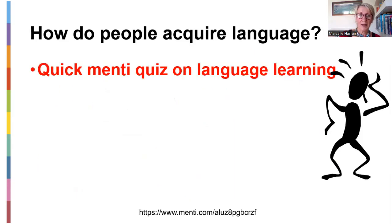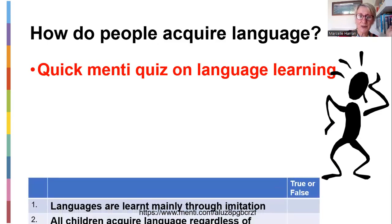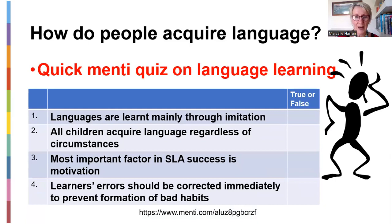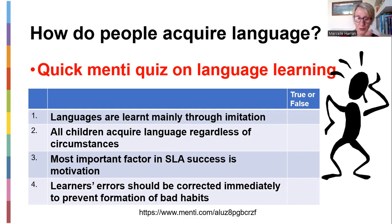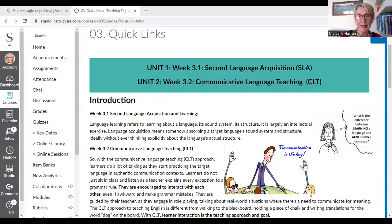Now you're going to do a Mentee quiz on language learning — four true or false questions. Question one: languages are learned mainly through imitation — true or false? Question two: all children acquire language regardless of circumstances — true or false? Question three: the most important factor in SLA success is motivation — true or false? Question four: learners' errors should be corrected immediately to prevent bad habits — true or false?